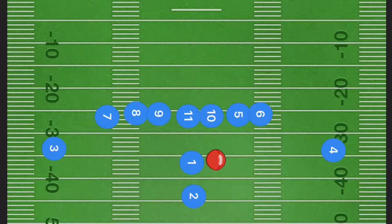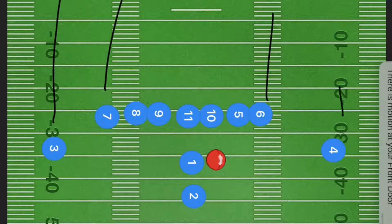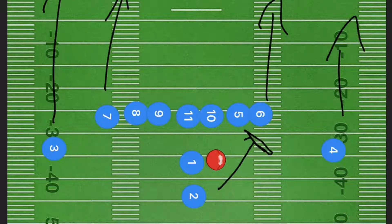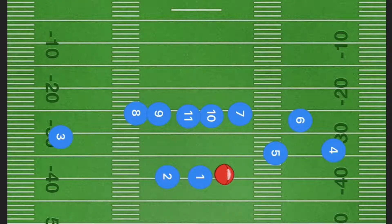In this next play, it's almost like a Hail Mary play. We're going to have players three, six, seven, and four going up the sideline and down the middle of the field. Meanwhile, player two will be blocking on the right or left side depending on what the defense is doing, and player one is going to be looking at the most open player downfield.